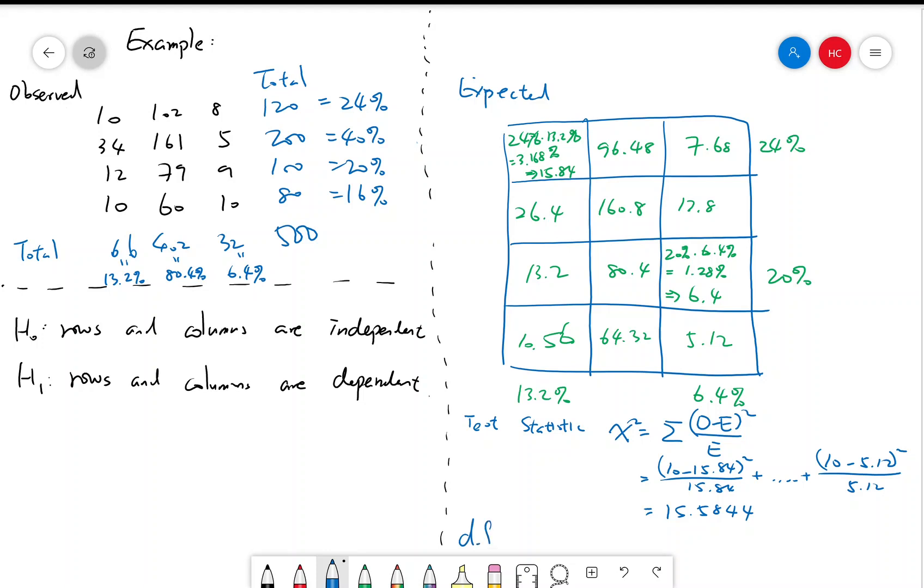And the degree of freedom is the number of rows minus 1, which is 4 minus 1, times the number of columns minus 1, which is 3 minus 1. So this is equal to 3 times 2, which is 6.